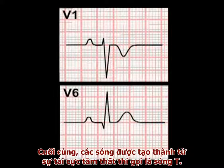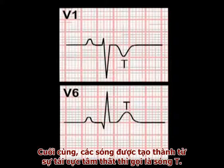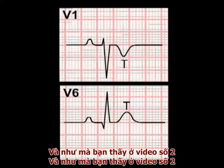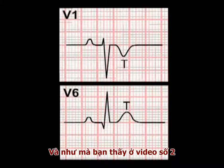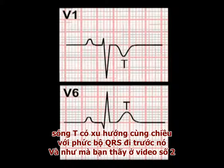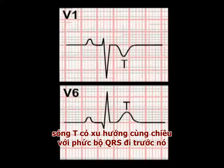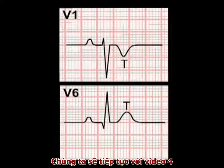Finally, the diffuse deflection produced by ventricular repolarisation is termed a T-wave, and as we've seen in video 2, the T-wave tends to be concordant with the preceding QRS complex.